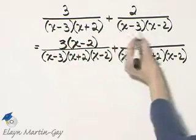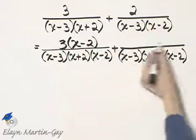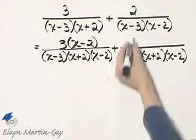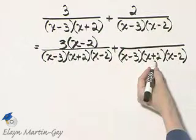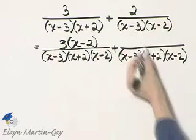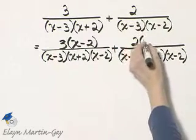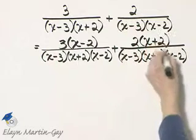And now, what do I multiply this denominator by in order to have the common denominator? I will multiply by x plus 2, and if I do that in the denominator, I must also do that in the numerator.